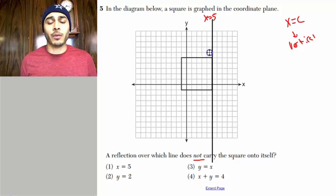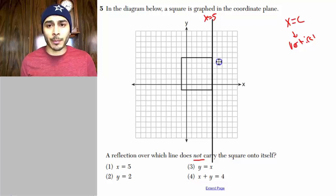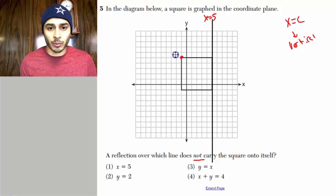Now, if we reflect this square across this line, what will that produce? Well, go ahead and do it. Just work it out. Let's call this point A. Let's call this point B. We'll call this point C. And then we'll call this point D.